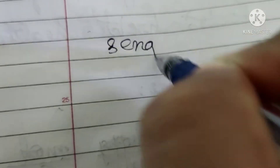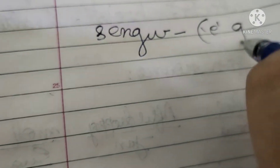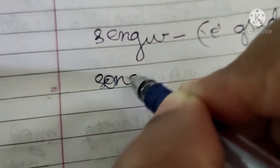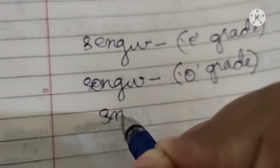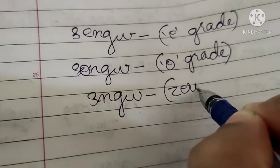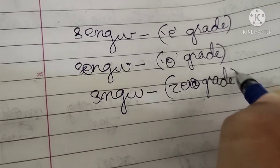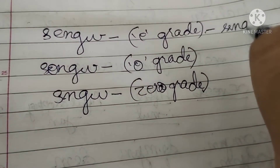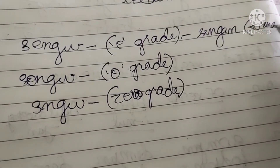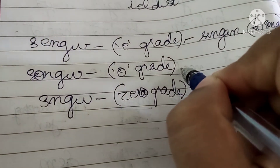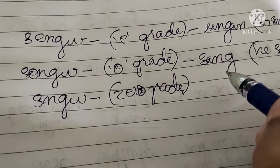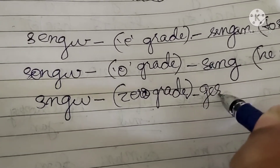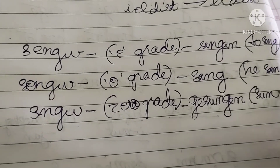In the original Proto-Indo-European, the word for 'sing' existed as three forms: one which was the e-grade, one which was the o-grade, and one which was the zero grade. The e-grade form gave rise to 'singan', meaning 'to sing'. The o-grade form gave rise to 'sang', meaning 'he sang'. And the zero grade form gave rise to 'sungen', meaning 'sung'. So we have sing, sang, sung — e-grade, o-grade, zero grade.